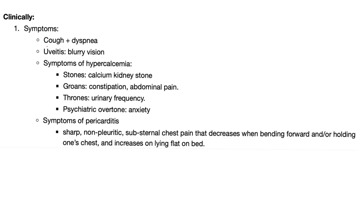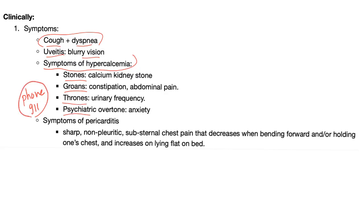Symptoms of sarcoidosis include cough and dyspnea, like any respiratory disease. Uveitis can lead to blurry vision. If you have hypercalcemia, remember: stones (calcium kidney stones), groans (constipation, abdominal pain), thrones (urinary frequency), psychiatric overtones (anxiety), and phone — call 911 — because it can lead to acute pancreatitis.